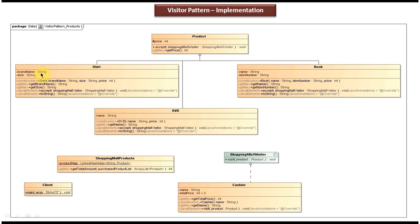Shirt has two attributes: brand name and size. Book has two attributes: name and ISBN number. DVD has only one attribute: name. ShoppingMallVisitor is an interface with a visit method that accepts a visitable object, which is Product, making it an abstract method. Cashier is a concrete class that implements the ShoppingMallVisitor interface and provides implementation of the visit method, visiting each product and calculating the price.